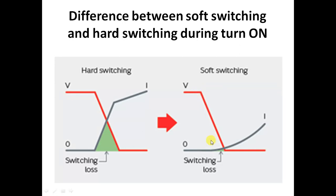Zero voltage switching means when voltage becomes zero, then you turn on the switch. So power loss is V into I. If V is zero, power loss is zero.